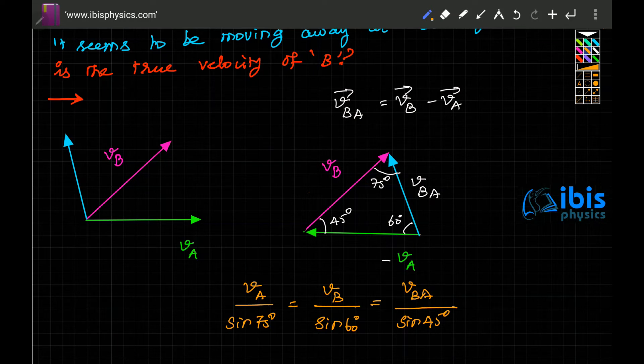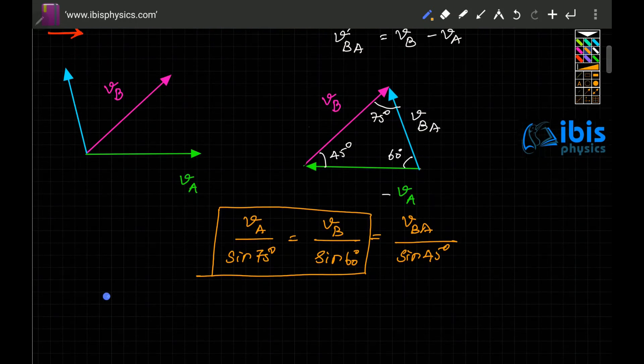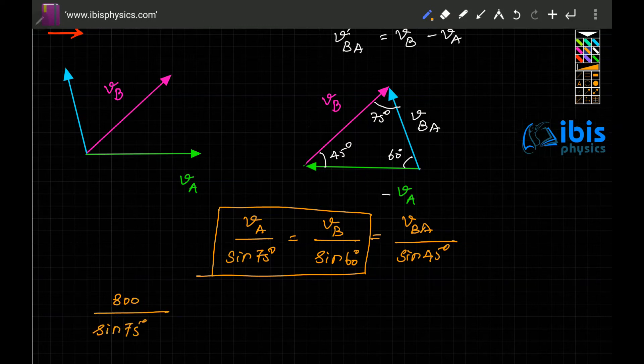What you already know is the velocity of A. You can find the relative velocity or the actual velocity using this. If you compare these two, you'll get the actual velocity of B. Velocity of A is given as 800 kilometers per hour. So 800 by sine 75 degrees, where sine 75 is somewhere between root 3 by 2 and 1, equals velocity of B by sine 60 degrees, which is root 3 by 2.